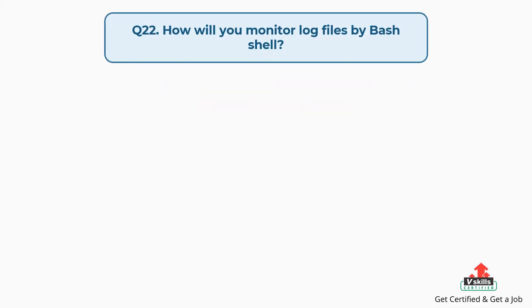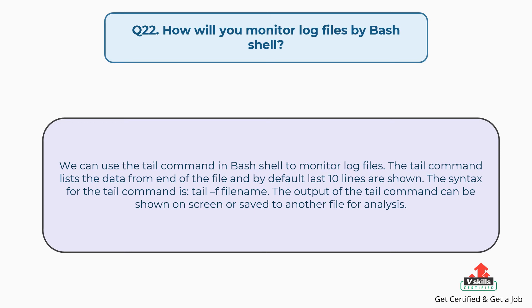Question number twenty-two: how will you monitor log files by bash shell? We can use the tail command in the bash shell to monitor log files. The tail command lists data from the end of the file and by default the last 10 lines are shown. The syntax is: tail -f filename. The output can be shown on screen or saved to another file for analysis.